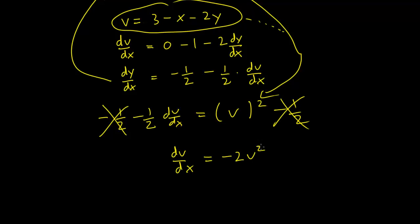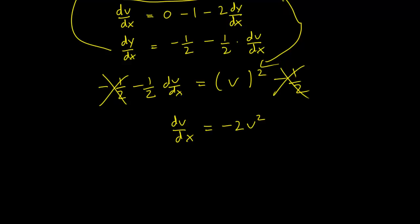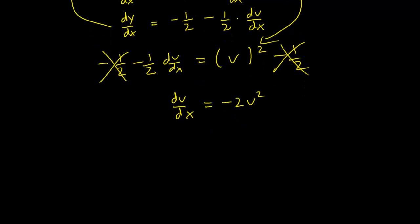That seems like a fairly straightforward differential equation. So this seems like something that we can solve easily through integration. Let's move all the v's on one side. And we have 1 over v² dv equals minus 2 dx.